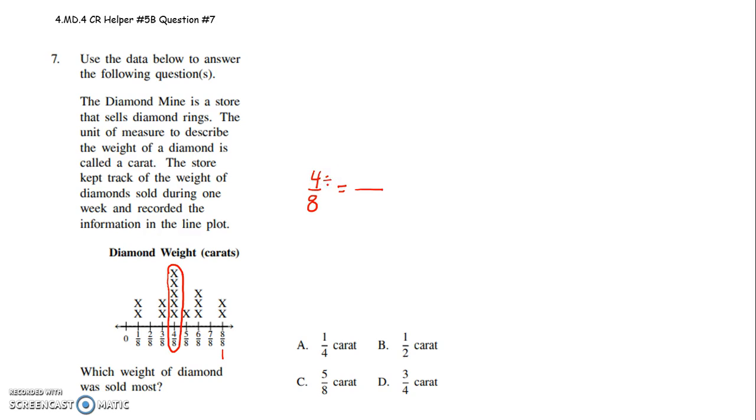So I say, is there a number that divides nicely into both 4 and 8? Oh, 4 can be divided by 4. 4 divided by 4 is 1. 8 divided by 4 is 2. So four-eighths is the same as one half.